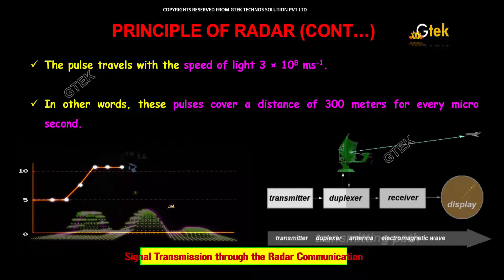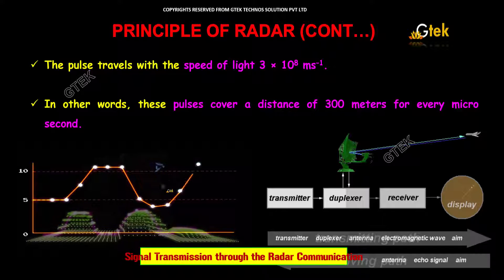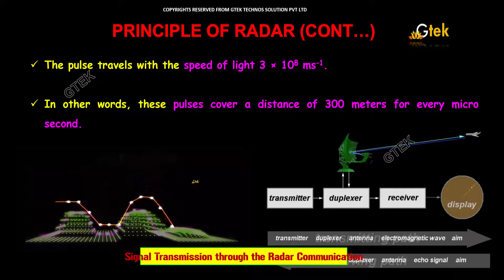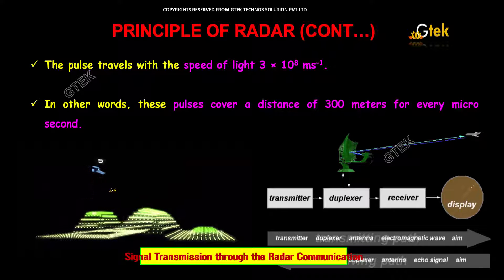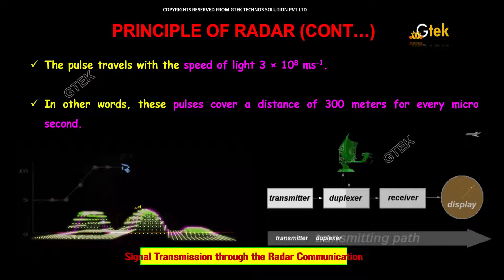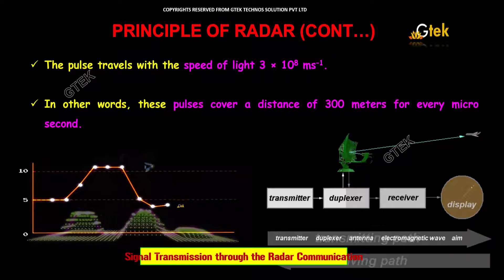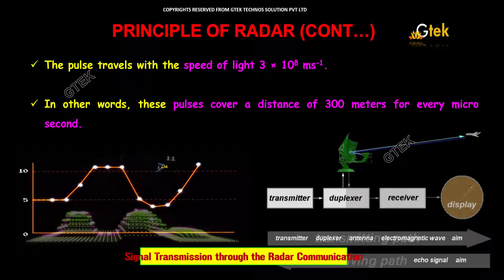You are able to see the signal transmission through the radar communication. The vehicle is moving on. We are able to identify the height of the mountain or height of the obstacles by putting out the signal and getting it back.